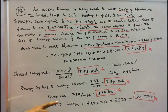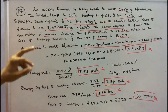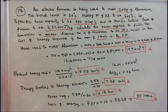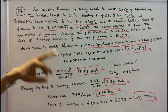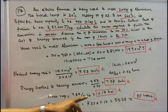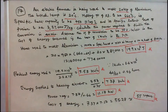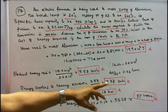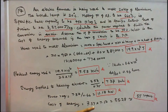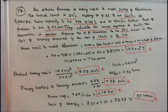Power required: the conversion takes 40 minutes, which is 40 by 60 equal to 0.66 hours. Power is equal to 7.37 divided by 0.66, which is 11.17 kW. Cost of electrical energy is 7.37 kWh into Rs. 7.50 per kWh, which equals Rs. 55.28.